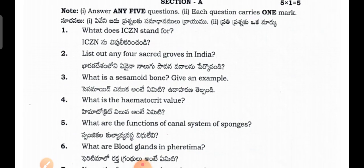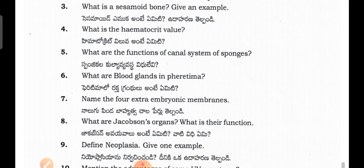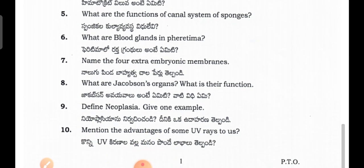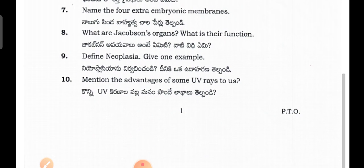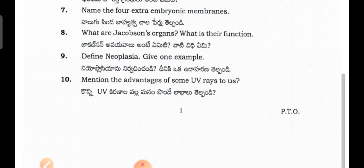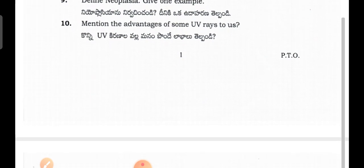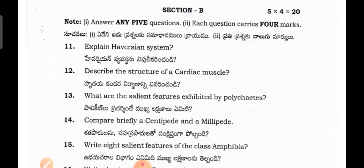Section A questions: What does ICZN stand for? List any four sacred groves in India. What is a sesamoid bone — give an example. What is the hematocrit value? What are the functions of the canal system of sponges? What are the blood glands in Pheretima? Name the four extra-embryonic membranes. What are Jacobson's organs and what is their function? Define neoplasia and give one example. Mention the advantages of UV rays to us.